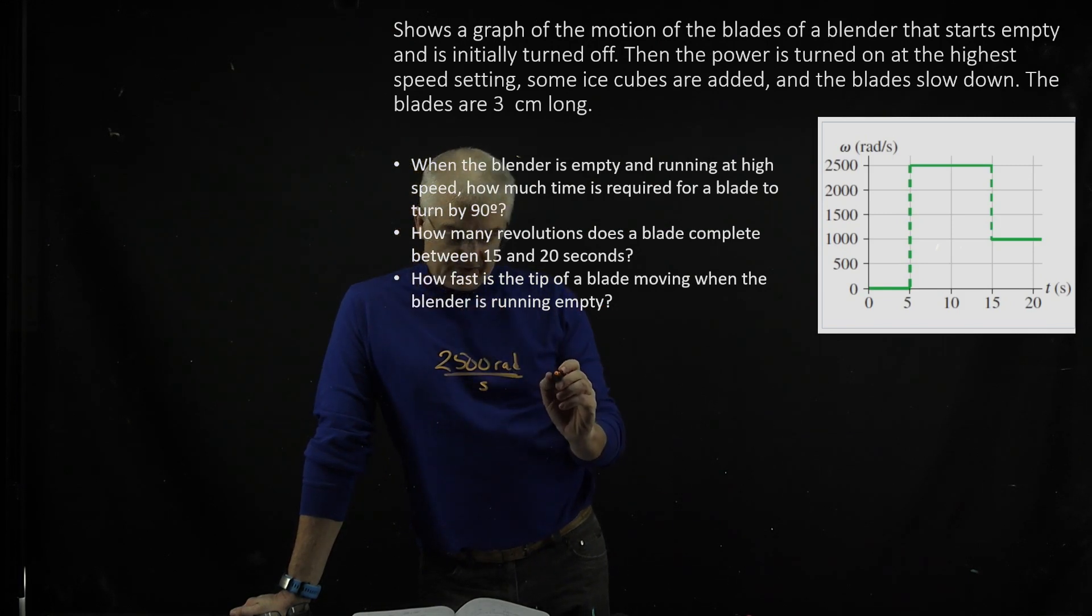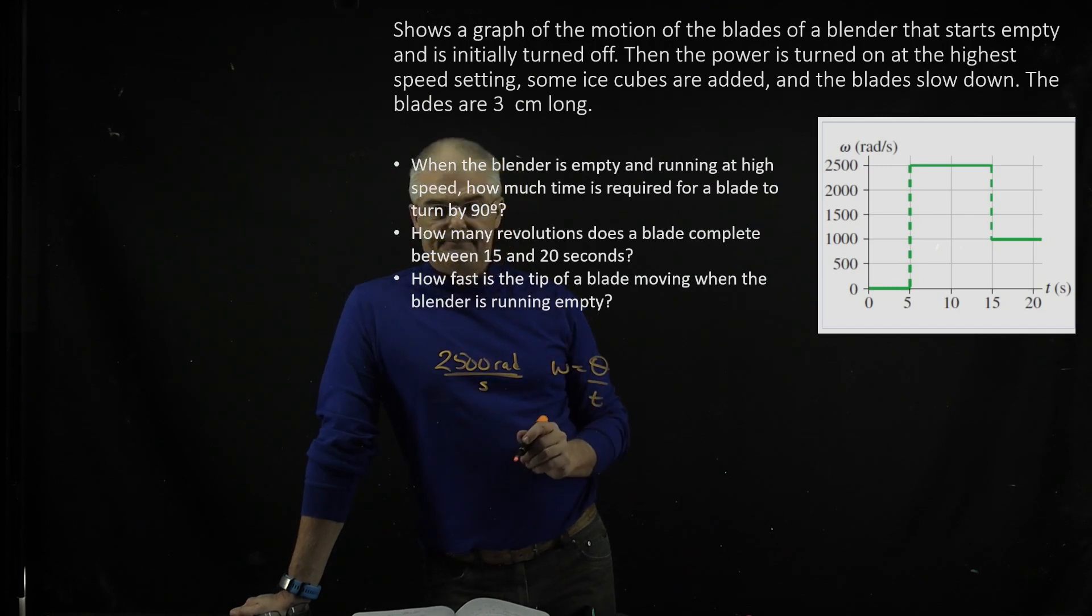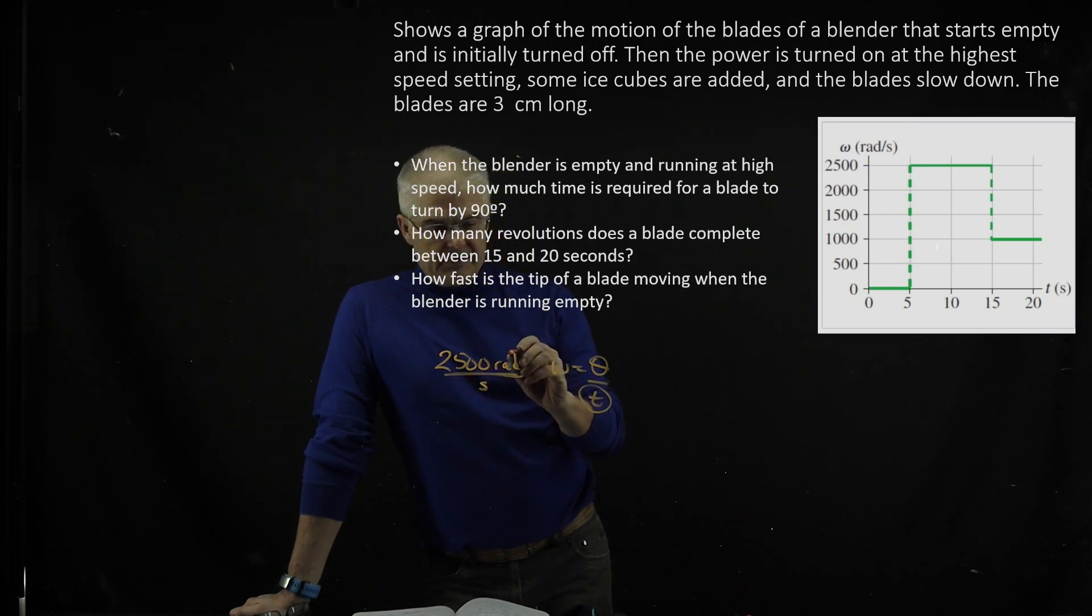Or maybe I should think of it this way. ω is the angle over time, right? And it's asking when it's high speed, how much time? You're solving for time. They've given you, this is ω. It says, and you're doing 90 degrees.